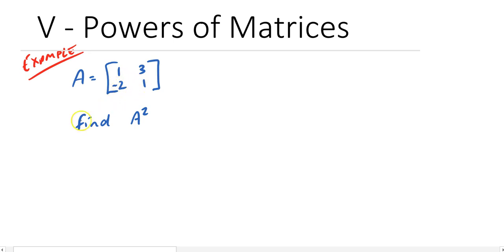So for instance, A equals 1, 3, negative 2, 1. Find A squared. Well A squared is just that matrix multiplied by itself and you've really just got to do the grunt work here and actually do exactly that.